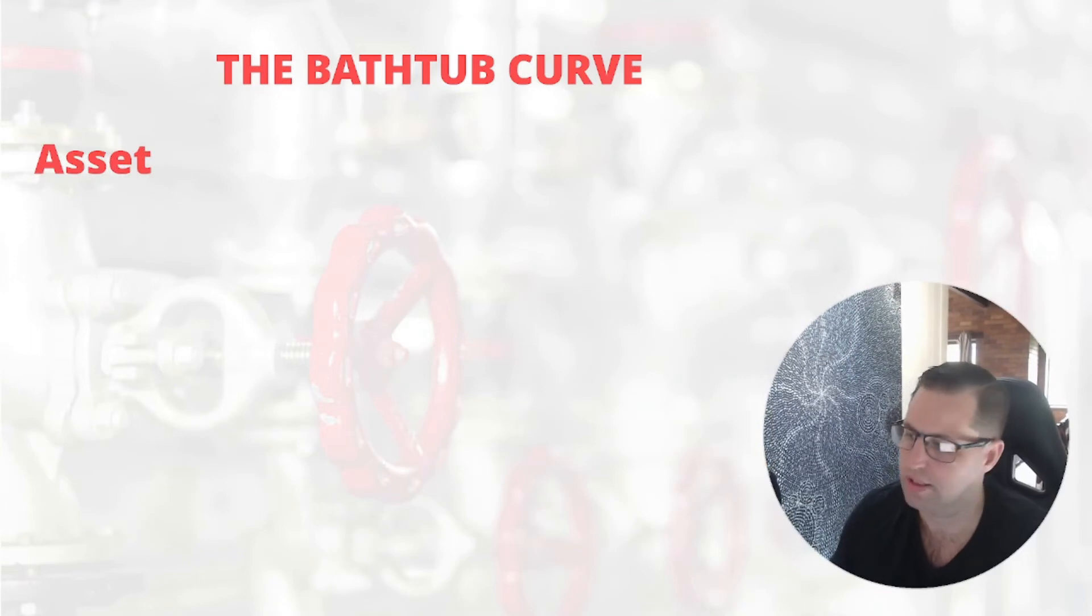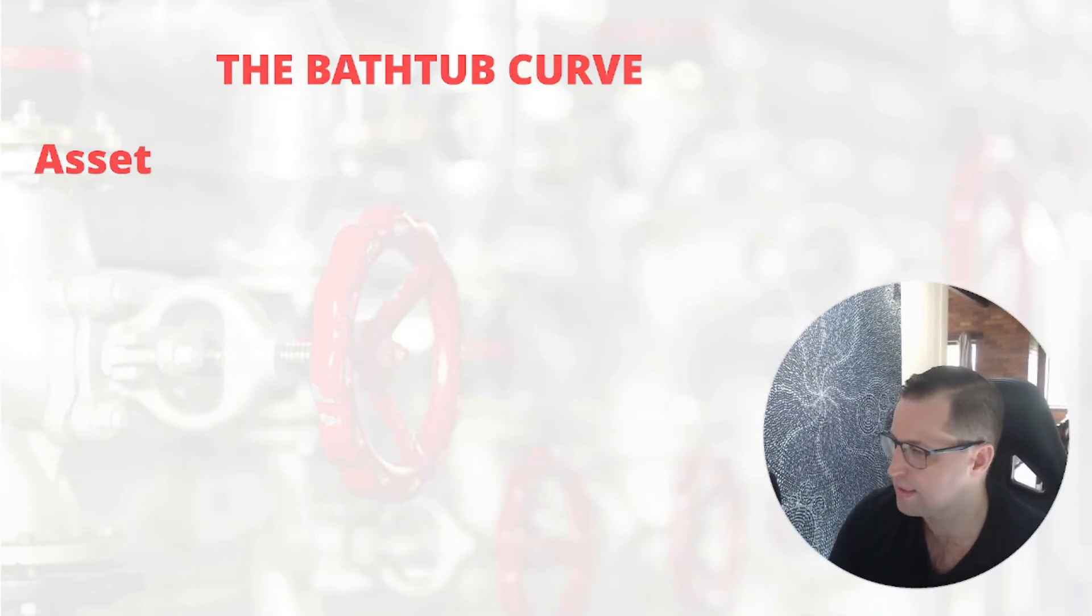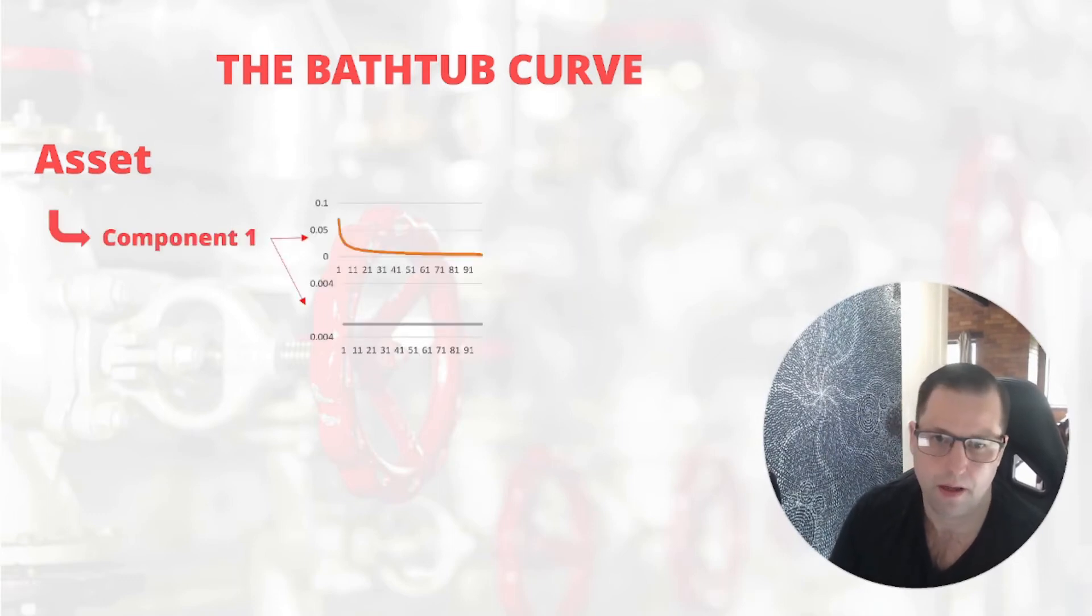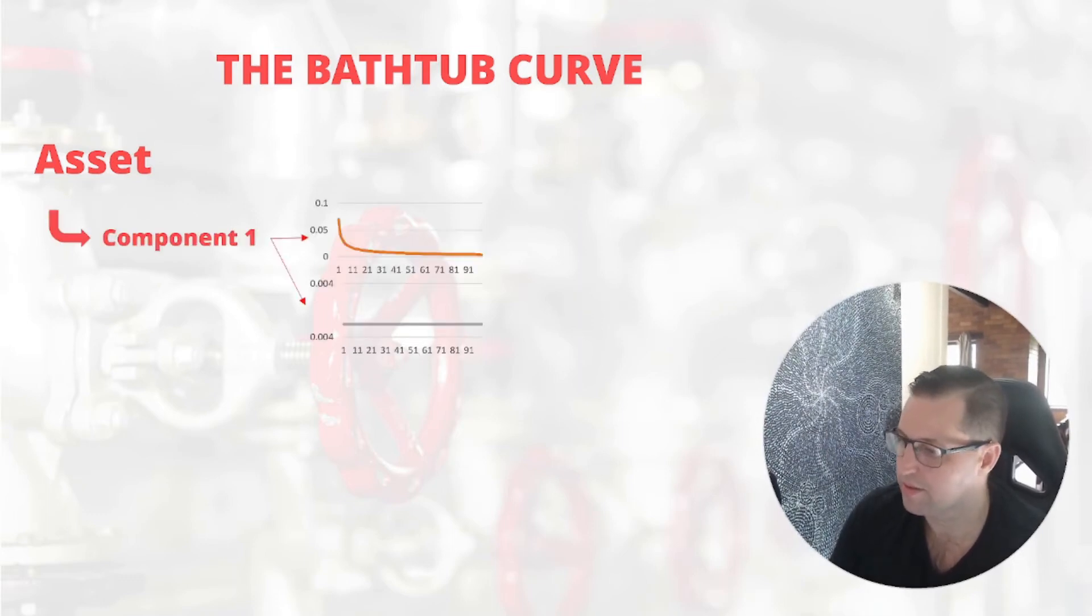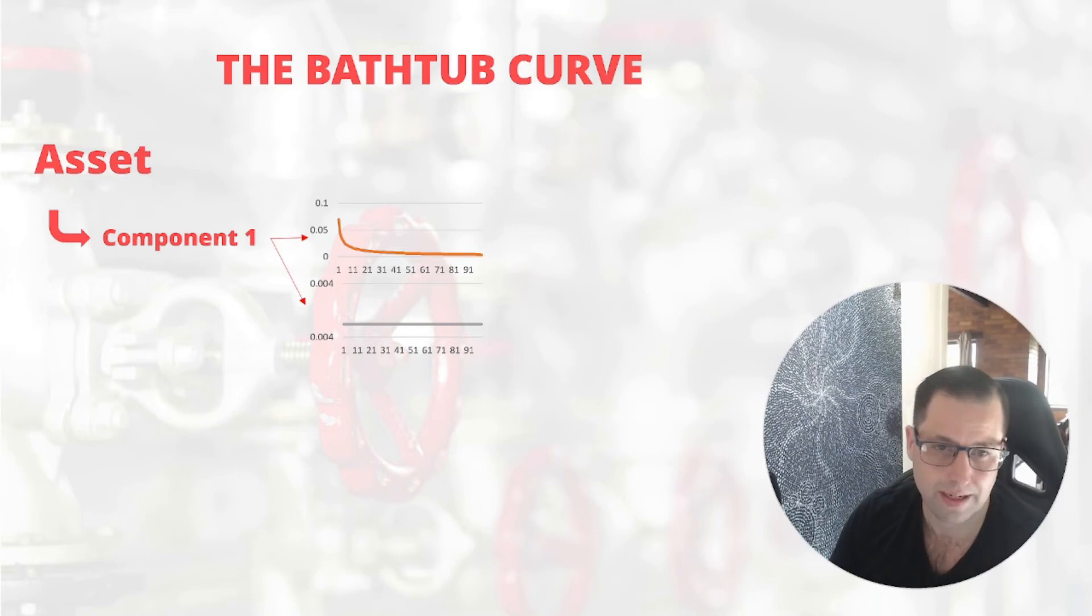So how does this apply to something like an asset with multiple components? Well, let's take a hypothetical asset. We'll give it two components. The first one has two underlying failure modes.